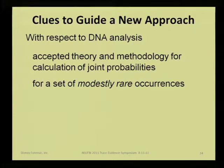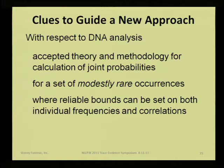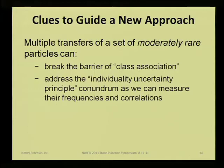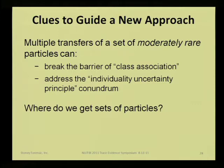One more clue: DNA analysis. We have accepted theory and methodology to calculate joint probabilities. They're not getting to it by proving there's one rare substance — they're getting it from a set of modestly rare occurrences. They can put reliable bounds on the frequency those occur and the correlation between them. So multiple transfers of a set of moderately rare particles could do the same thing for us — and they already do. We're already doing it. They can break the barrier of class association and address this individuality uncertainty principle, because we can now measure their frequencies of occurrence and their correlations.